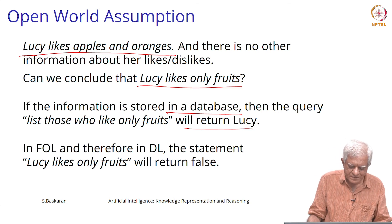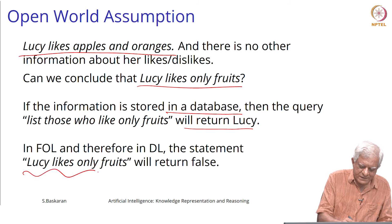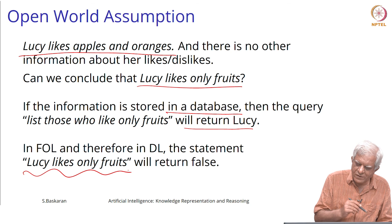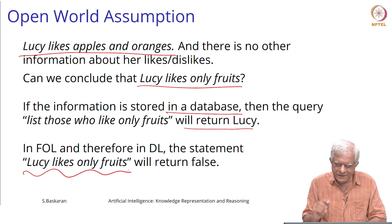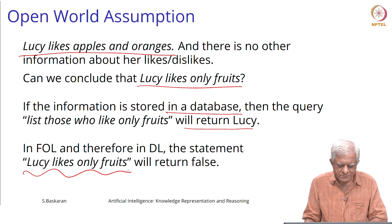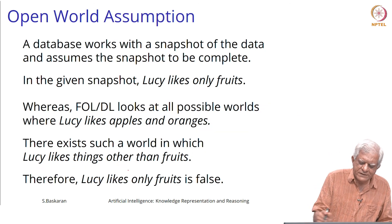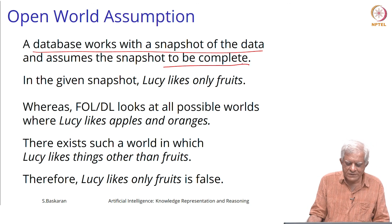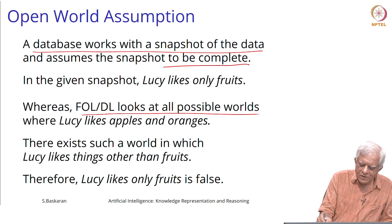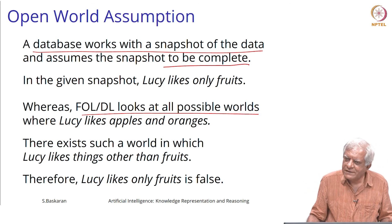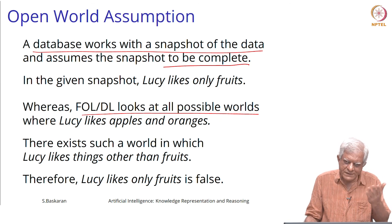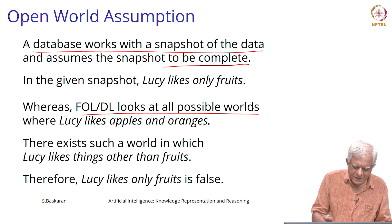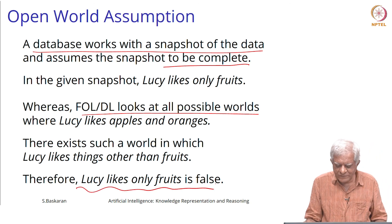A similar thing applies here, but if we say in description logic that Lucy likes only fruits, this will not return true — and we will see this when we look at the reasoning algorithm for description logic later. A database works with a snapshot of the data and assumes that snapshot is complete — we know everything that needs to be known. Whereas logic looks at all possible worlds: there can be things we have not mentioned, and it could be possible that she likes mobile phones, for example, though we have not mentioned it. So a statement like 'Lucy likes only fruits' would be false in such a case.